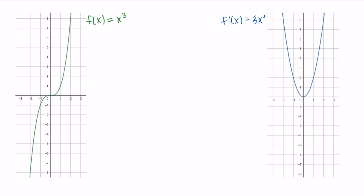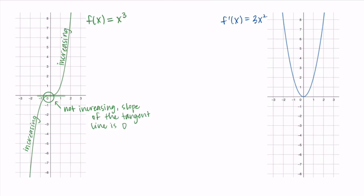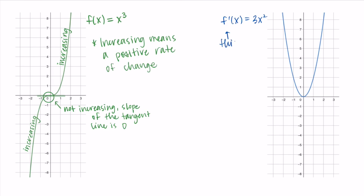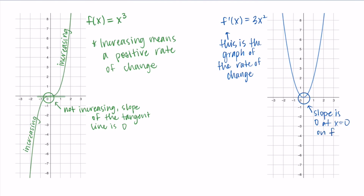Let's look at the graph of f and see where it's increasing and decreasing. This function is almost always increasing — it increases, then levels out at zero, then continues to increase. At x = 0 the function isn't increasing or decreasing; the slope is zero, so the tangent line there is horizontal.